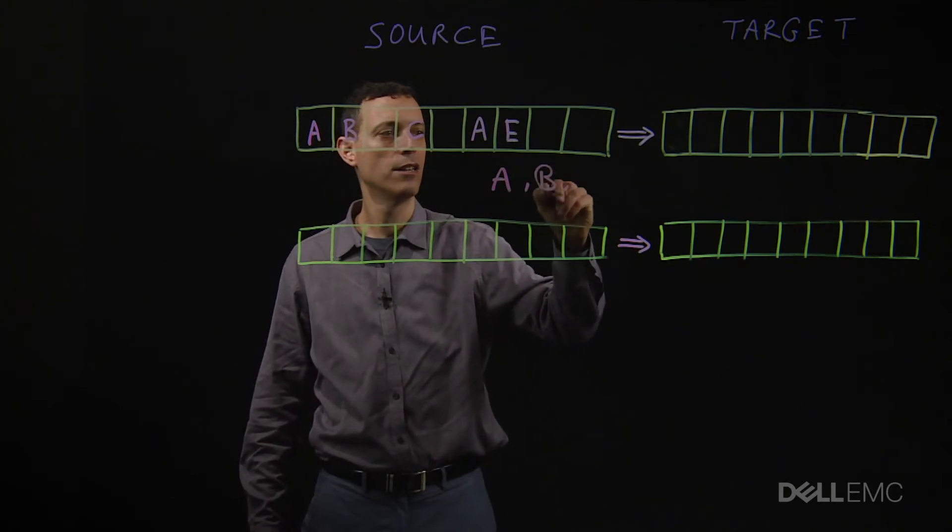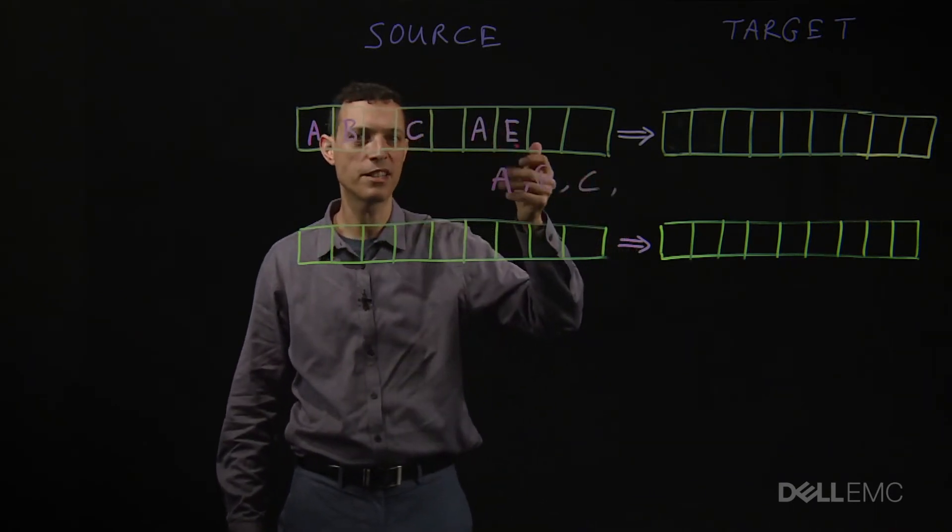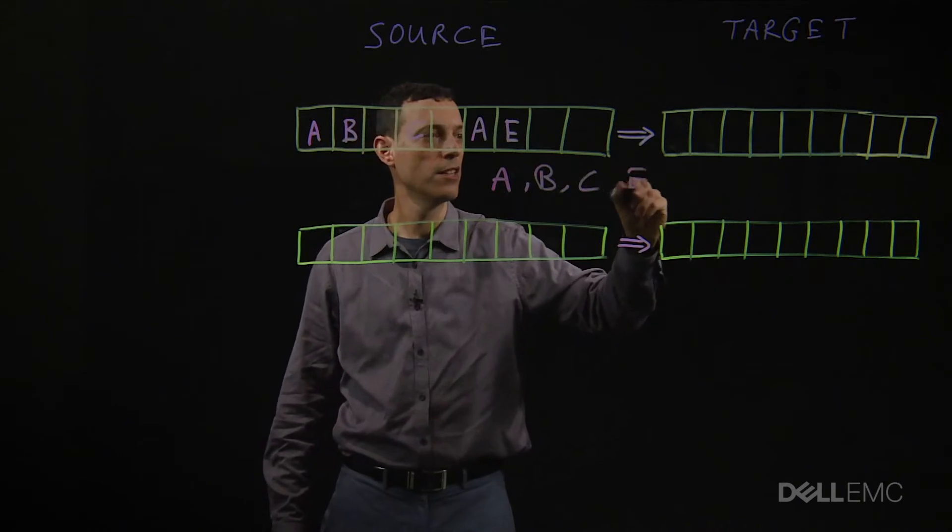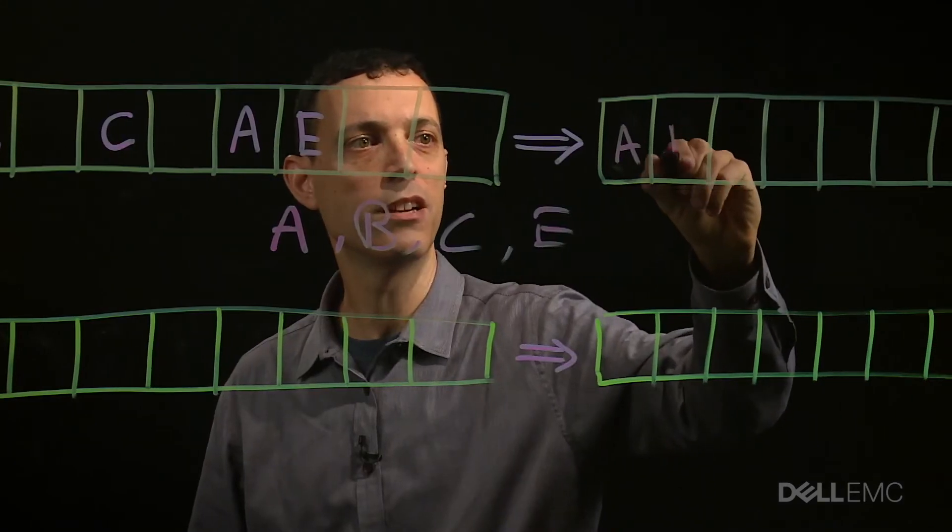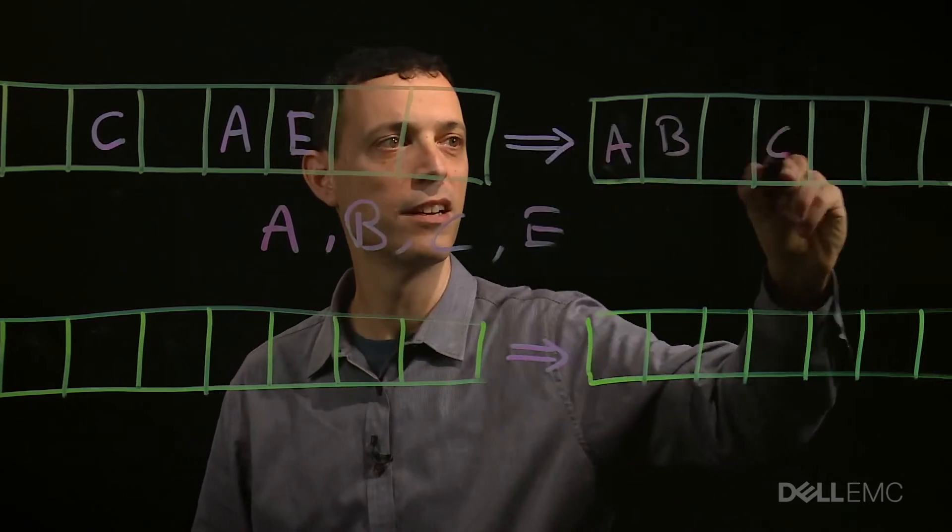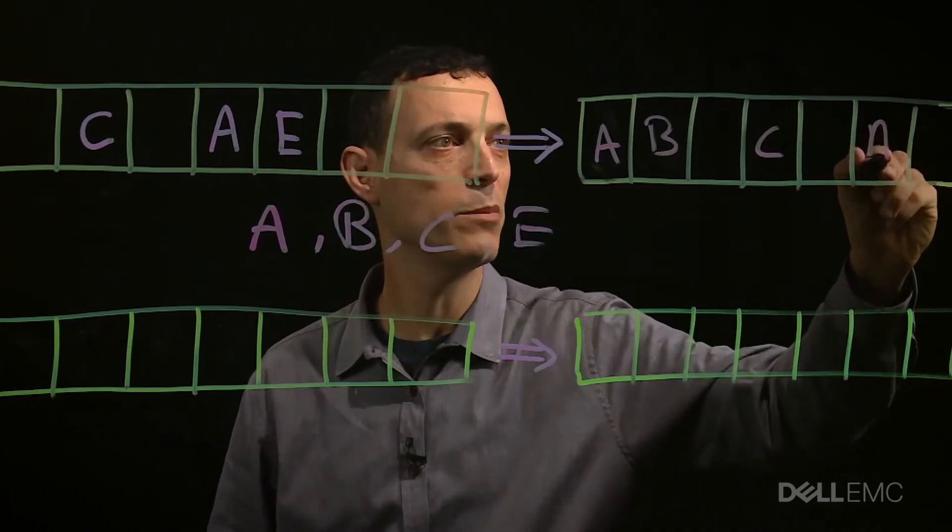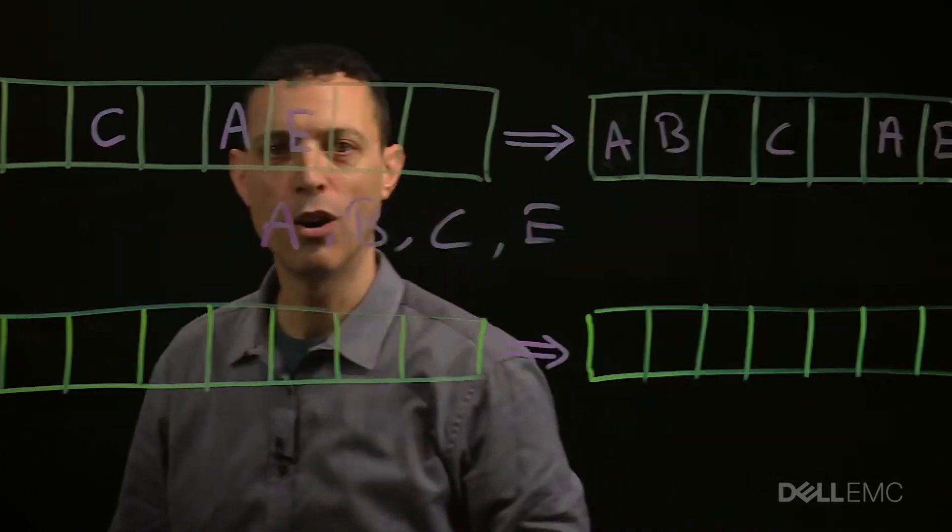We don't need to send A a second time. So E. And we recreate the exact same image on the target.